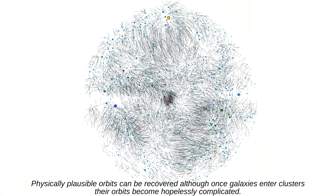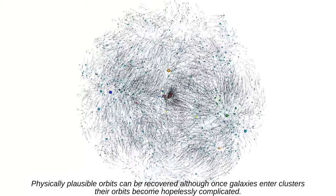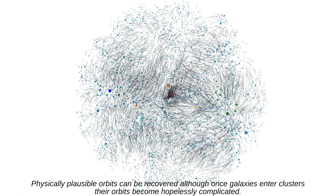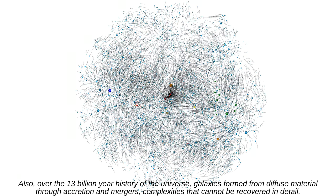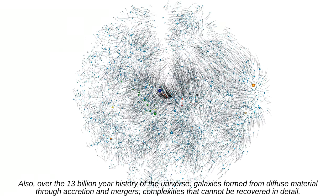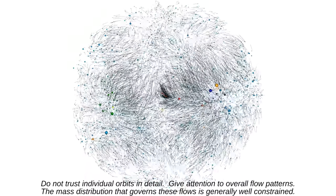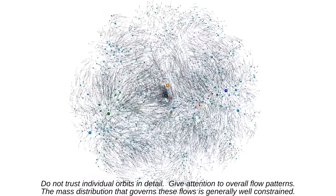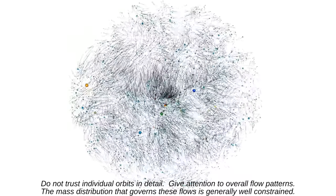Physically plausible orbits can be recovered although once galaxies enter clusters their orbits become hopelessly complicated. Also, over the 13 billion year history of the universe, galaxies form from diffuse material through accretion and mergers, complexities that cannot be recovered in detail. Do not trust individual orbits in detail. Give attention to overall flow patterns. The mass distribution that governs these flows is generally well constrained.